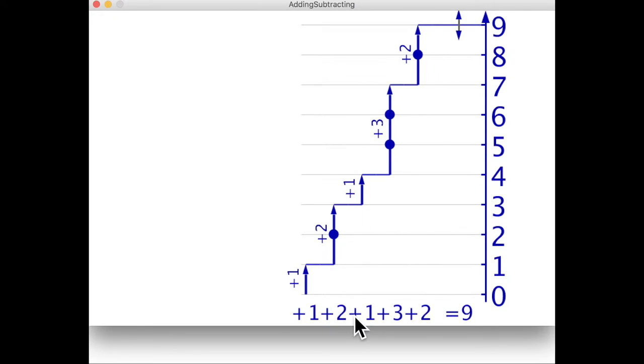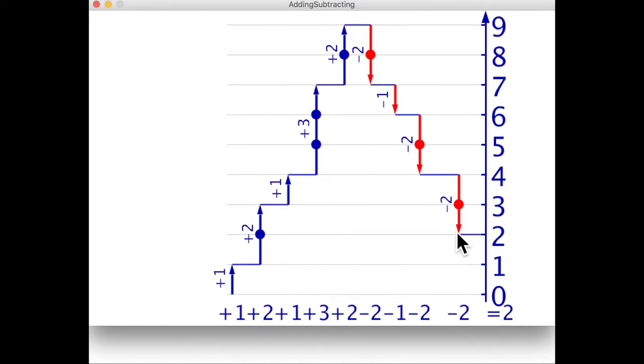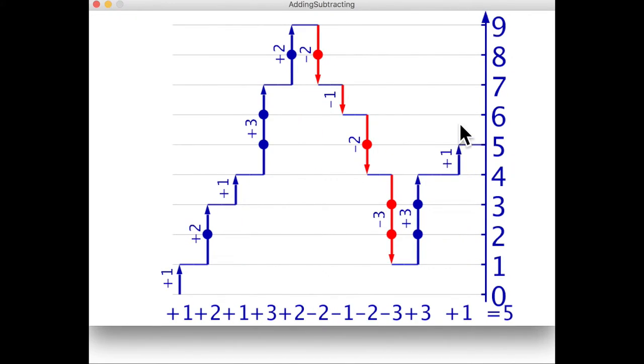We can also take steps towards the bottom of the screen and these subtract from our total distance up so we'll call them minus steps. They are the same size as the forward steps but in the opposite direction. Using plus and minus like this is called directed numbers.